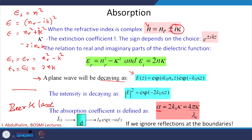This relation holds when we ignore reflections at the boundaries. If any material has a complex refractive index, it will be absorbing in that particular wavelength range, because all these refractive indices are wavelength dependent — which we will see. So if larger d gives a more rapid decrease in intensity, that is the absorption at work.